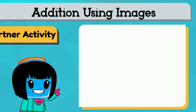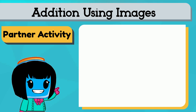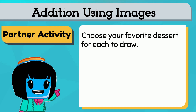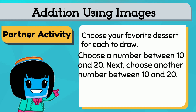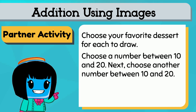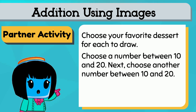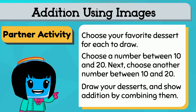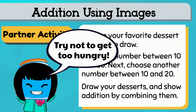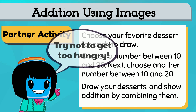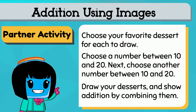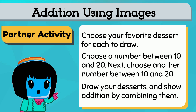You can do this with a partner. Working with a classmate, you can each choose your favorite dessert, then choose a number between ten and twenty. Next, choose another number between ten and twenty. Draw your desserts — try not to get too hungry — and show addition by combining them. Show your partner and talk about how you did it.